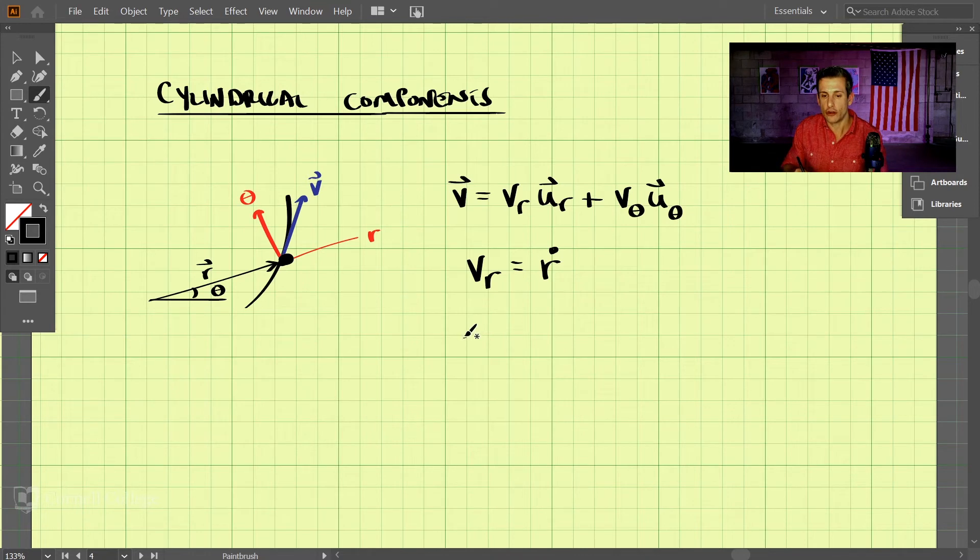And then in the transverse direction, the velocity component in the transverse direction is then equal to R times theta dot. So how fast is theta here changing? So the velocity in terms of radians per second in the transverse direction—radians per second times the radius—is then equal to how fast it's moving in this direction. And those are the two components.